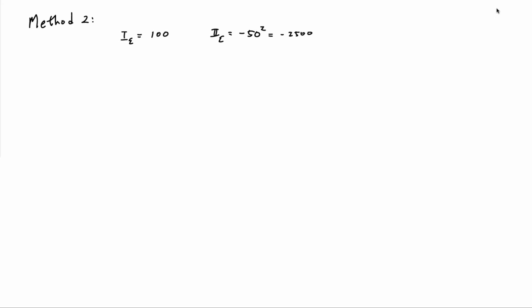And the second invariant, which is the determinant, is minus 2,500. So the characteristic polynomial, then, is minus lambda squared plus 100 lambda minus a minus 2,500. So that's plus 2,500.